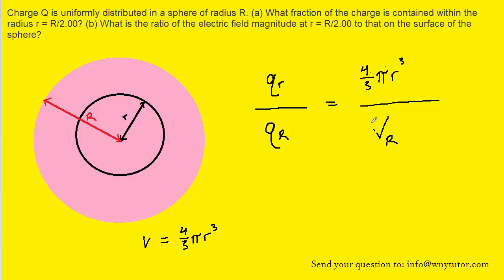And then a similar idea over here. We can replace the volume of the sphere whose radius was uppercase R with the formula for that volume, which will be 4 thirds pi times uppercase R cubed.